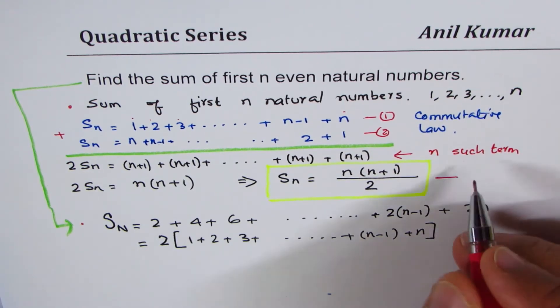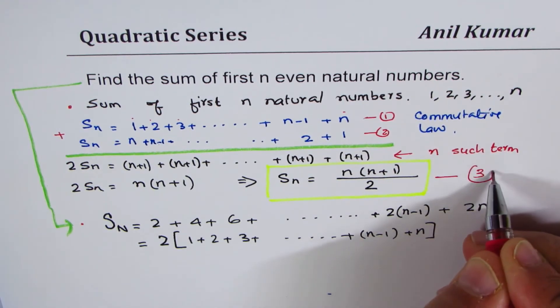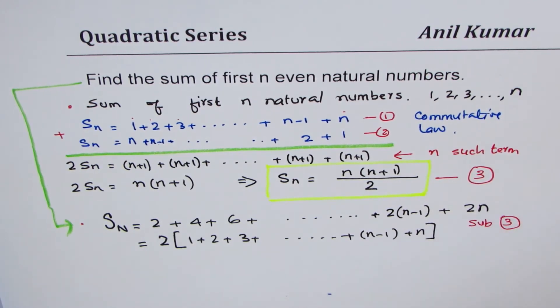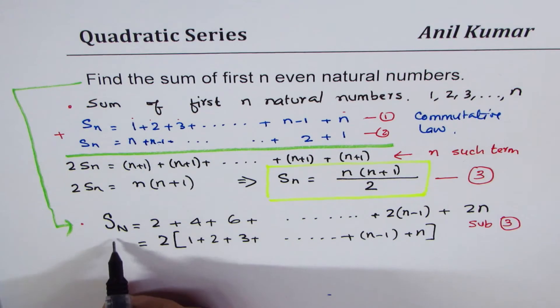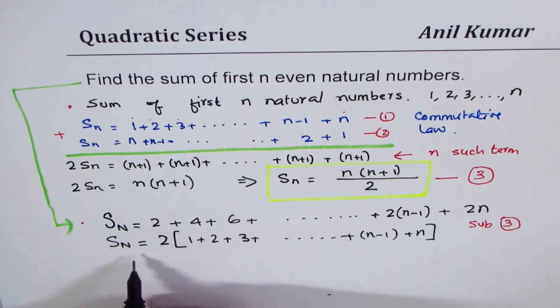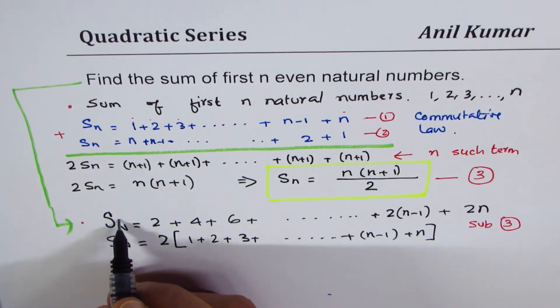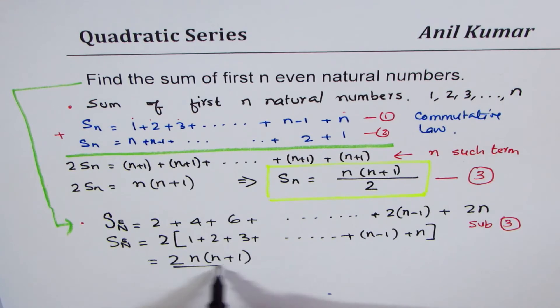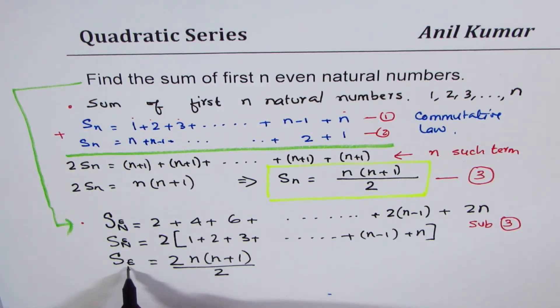Let me call this as my formula three. So, substitute three in here. So, what do I get? So, sum of even natural numbers. Let me call this as even natural numbers. This is better. So, that makes it, this thing goes to two times n times n plus one divided by two. So, that is sum of even natural numbers. Does it make sense to you?